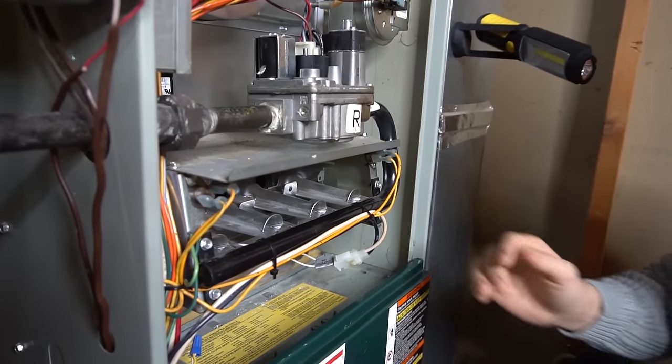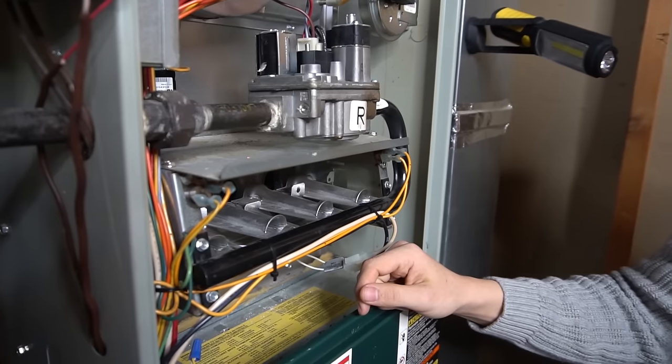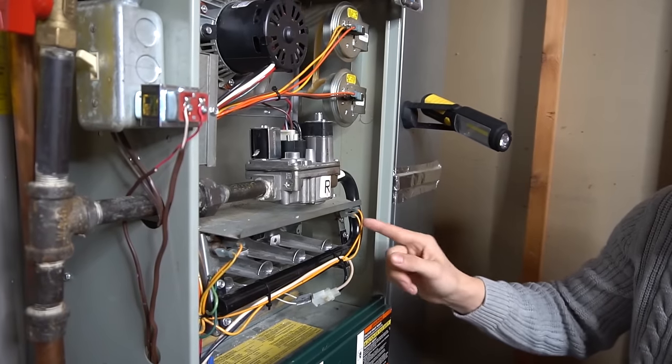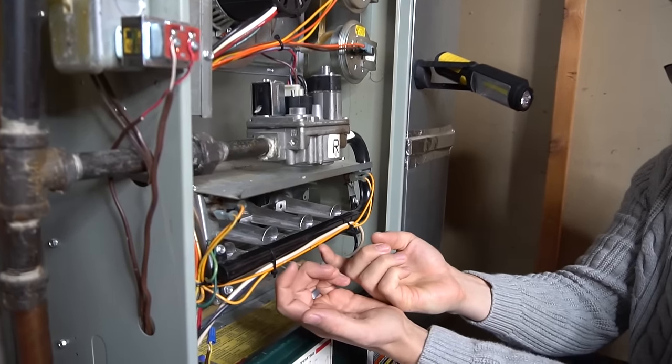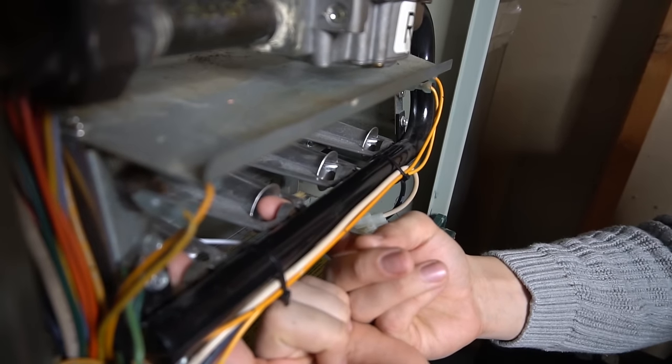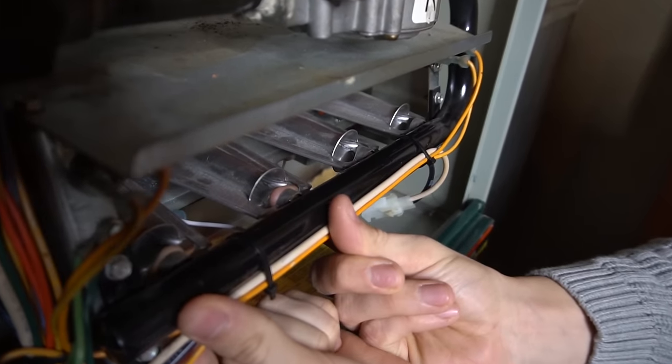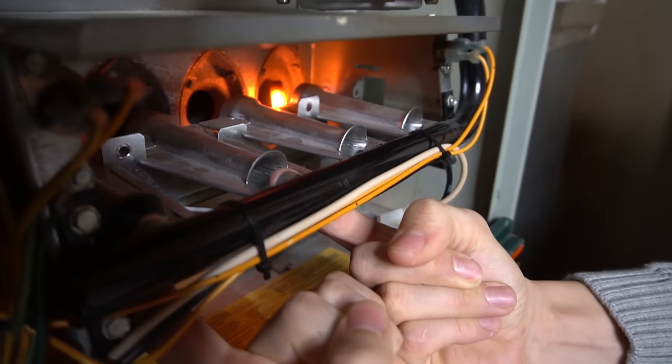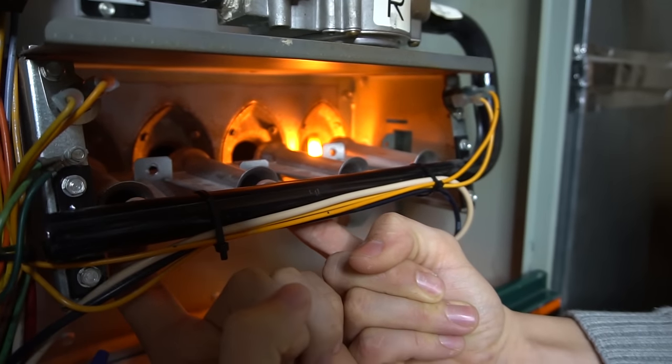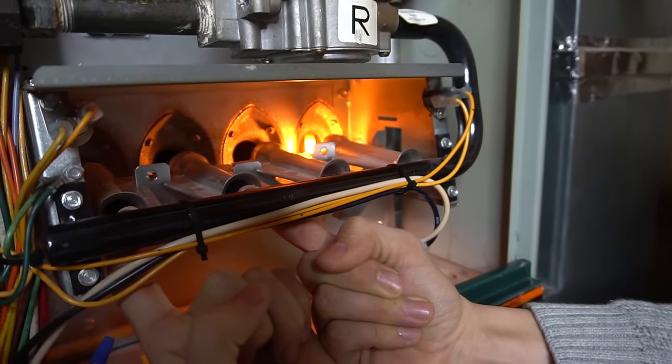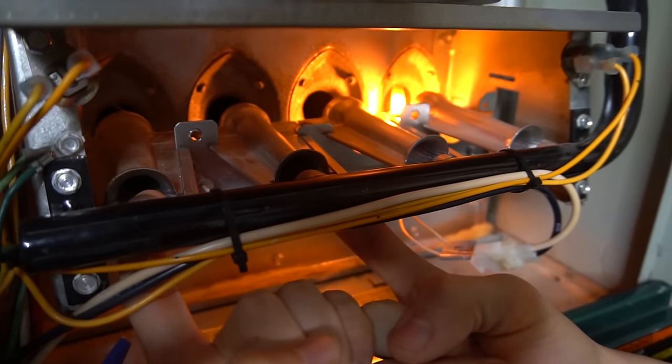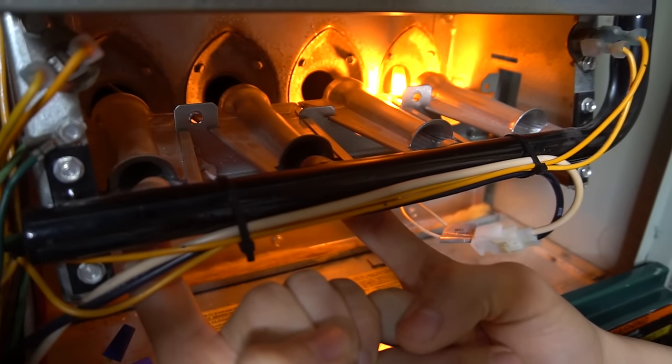So I turn my furnace back on, and there goes my inducer motor. Pressure switch is closed. My igniter should start to glow. And for example, I'm going to go ahead and just plug these two orifices with my fingers, just to show you what that would look like. So if this is what you're seeing, only two burners come on, or one or three, that would mean that your gas orifice, or a couple of them, are plugged up.